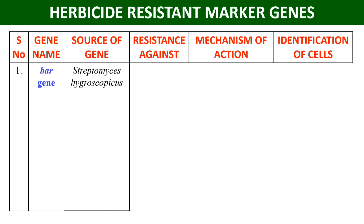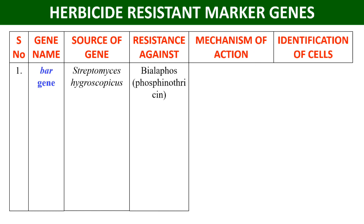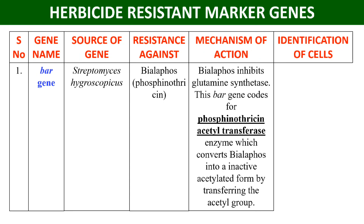The BAR gene provides resistance against bialaphos, which is also known as phosphinothricin. The mechanism of action is that bialaphos inhibits the enzyme glutamine synthetase, and the BAR gene encodes a specific enzyme.